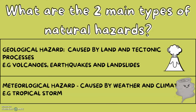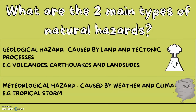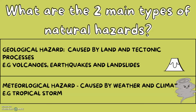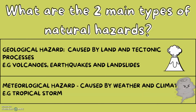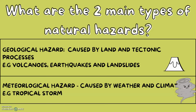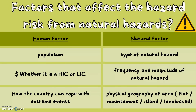What are the two main types of natural hazards? There are geological hazards and meteorological hazards. Geological hazards are caused by the land and tectonic processes — we'll cover this in another video. Meteorological hazards are caused by weather and climate. Volcanoes, earthquakes, and landslides are all examples of geological hazards, and tropical storms are all examples of meteorological hazards.